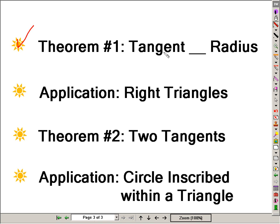The first theorem is how the tangent line relates to the radius, and then we will apply that theorem, and it will involve, of course, right triangles. The second theorem is how two tangent lines relate to one circle, and then we will apply that with a circle inscribed within a triangle.